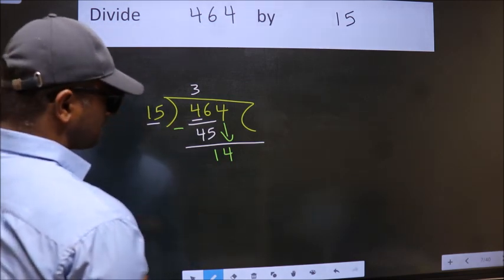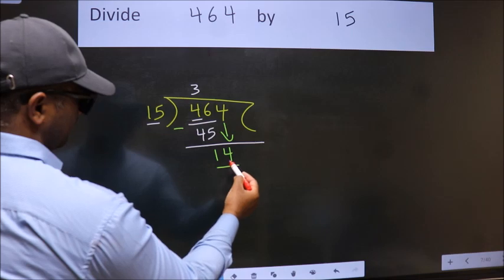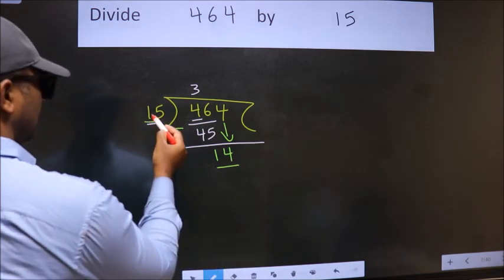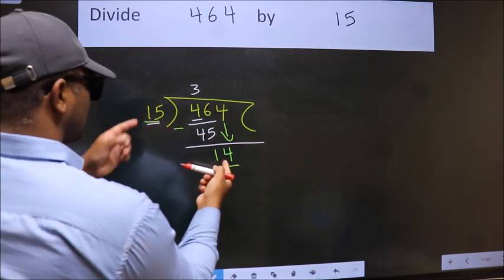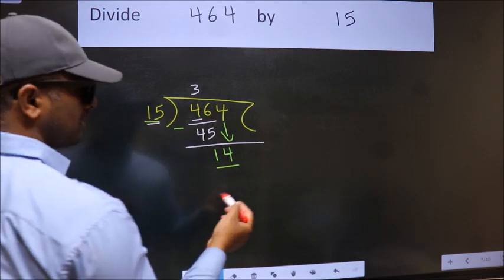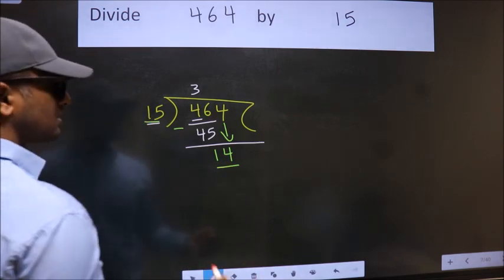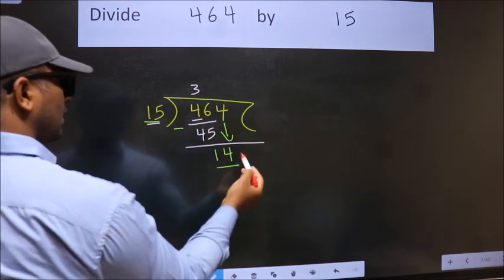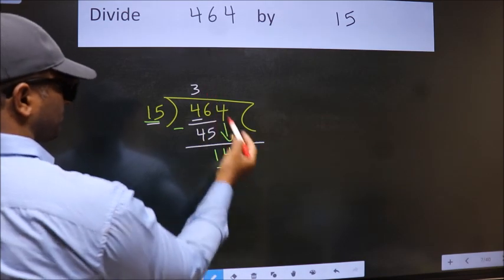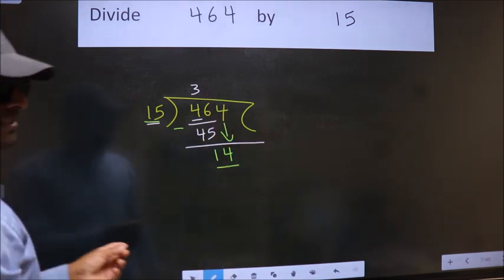And the mistake is this: here we have 14, here 15. 14 is smaller than 15. So what many do is they directly put dot, take 0, which is wrong.